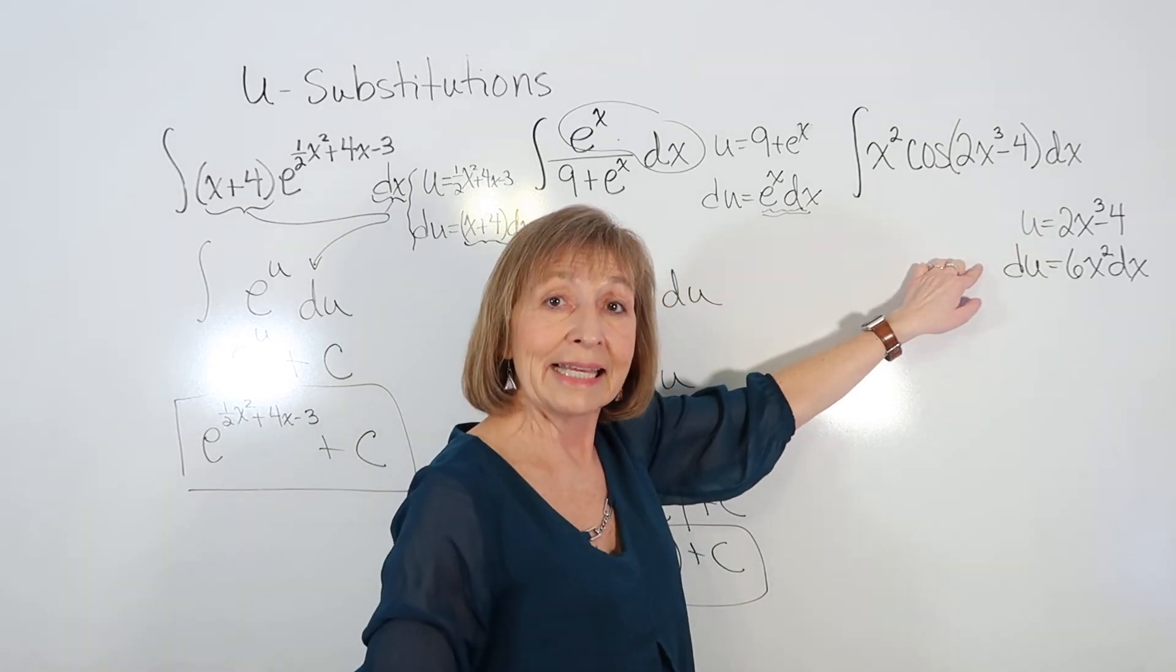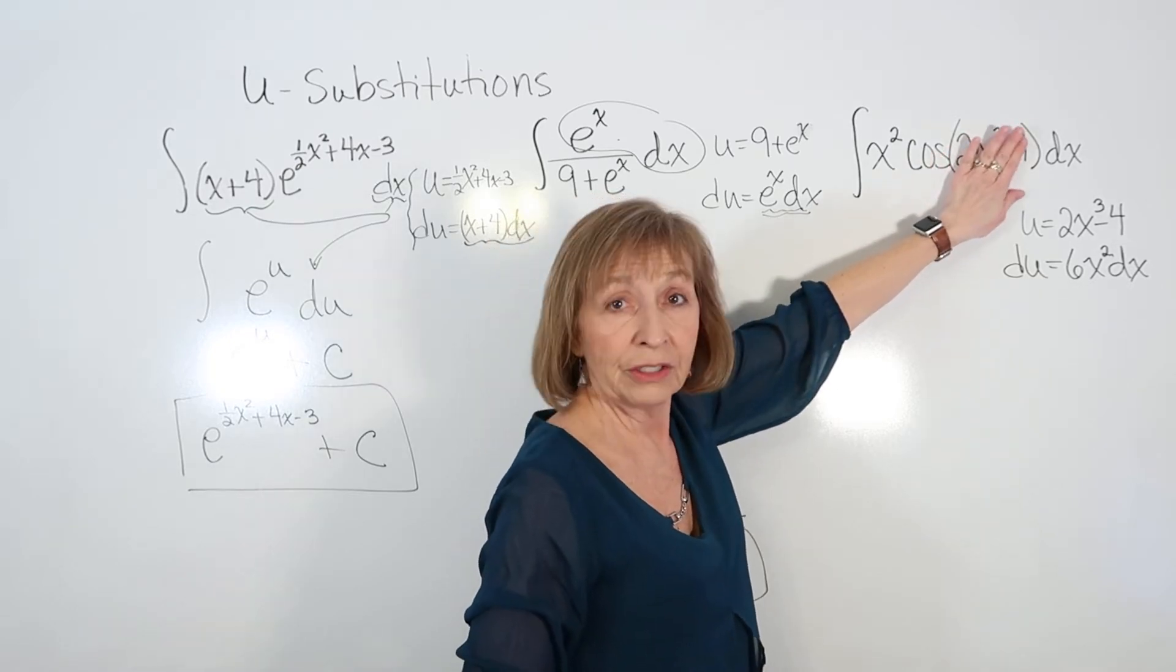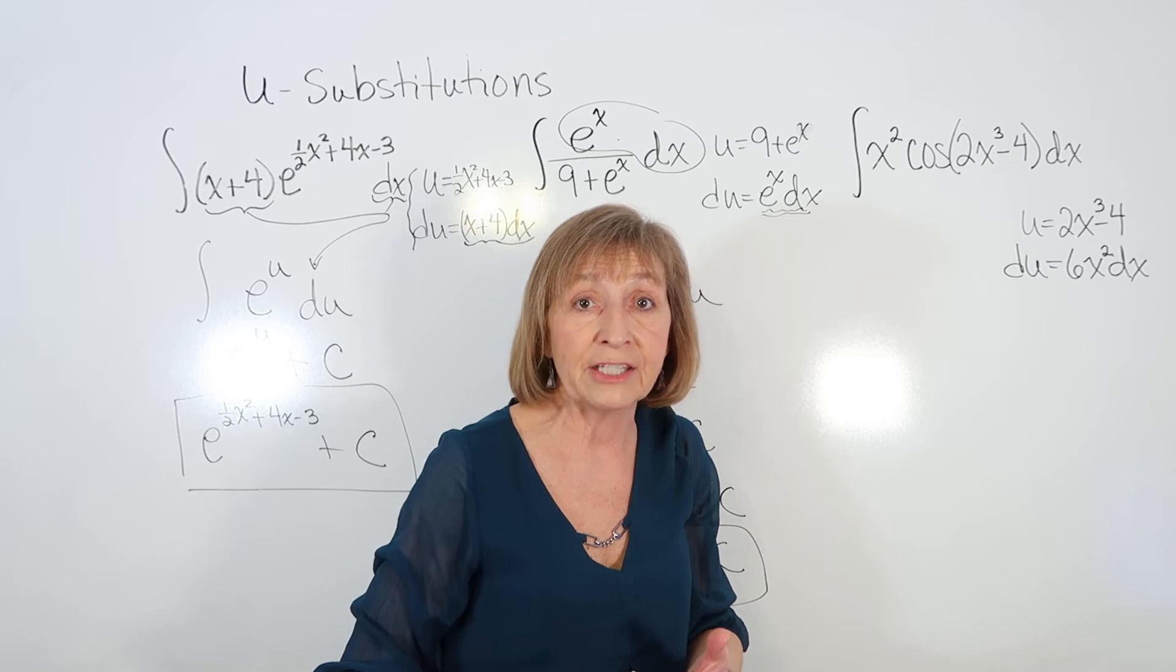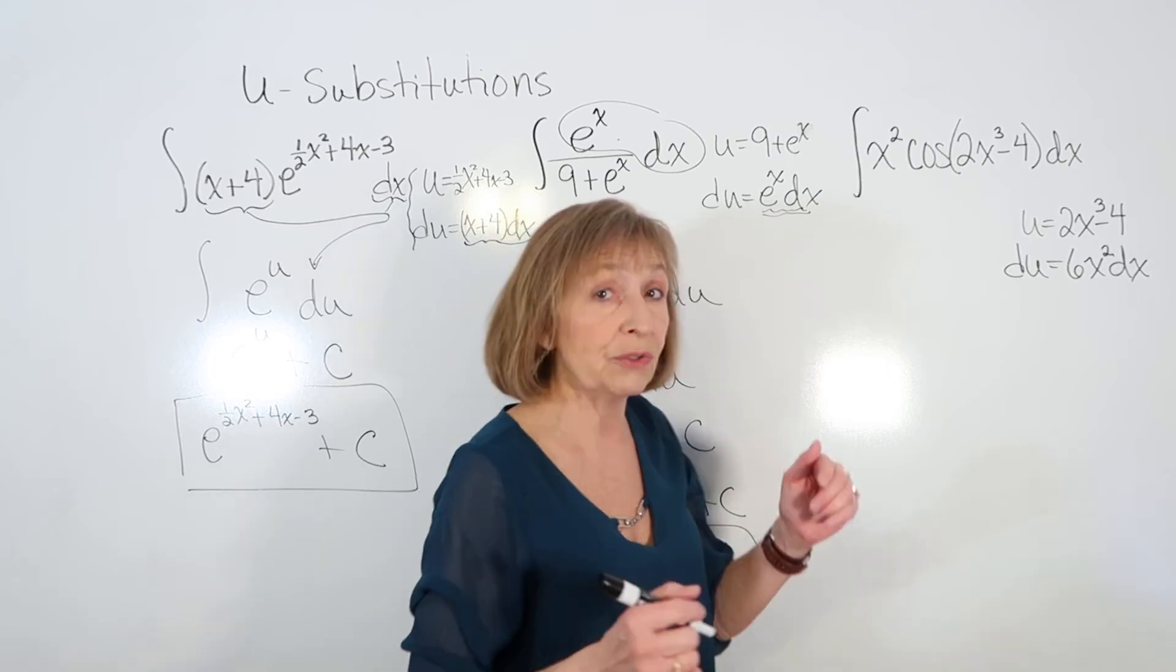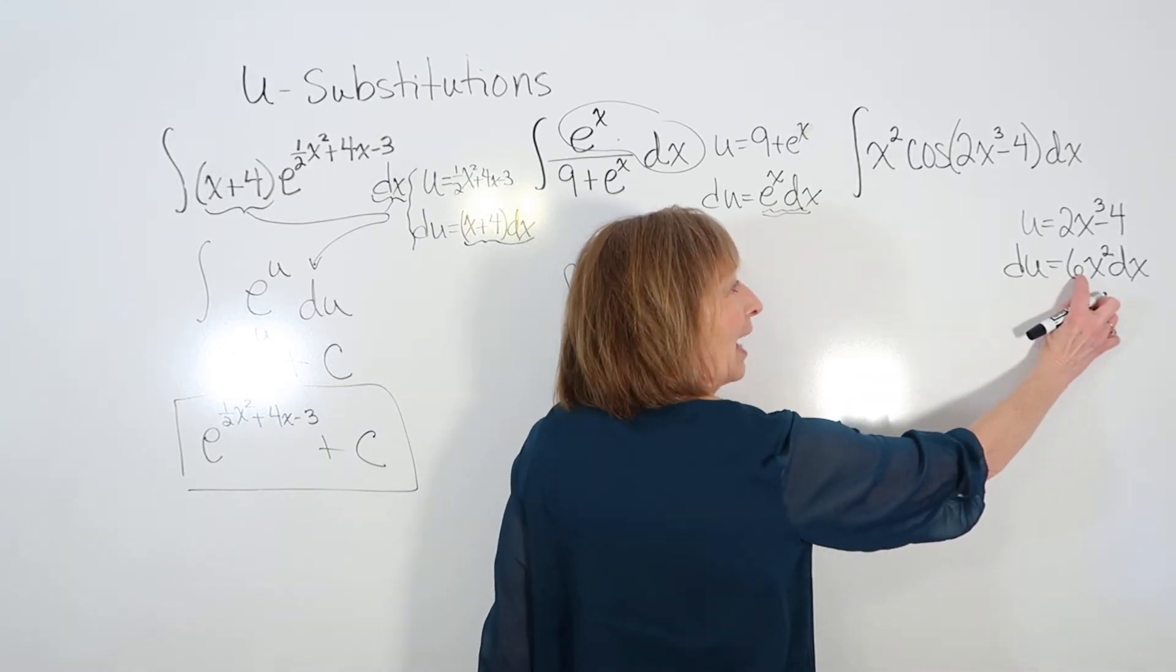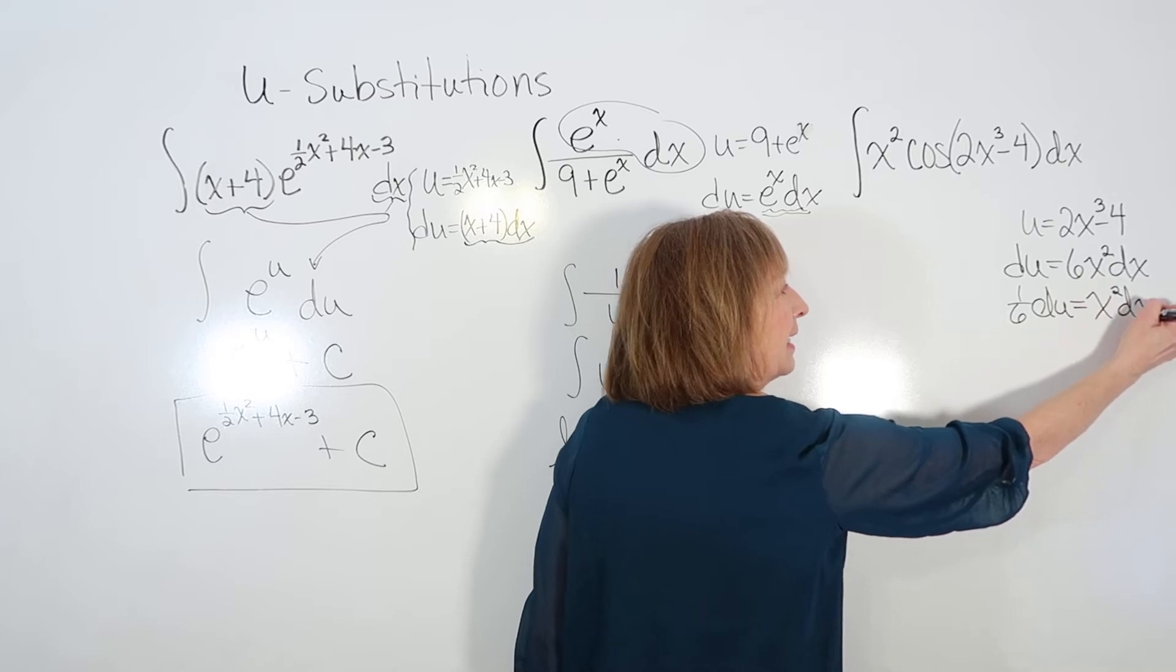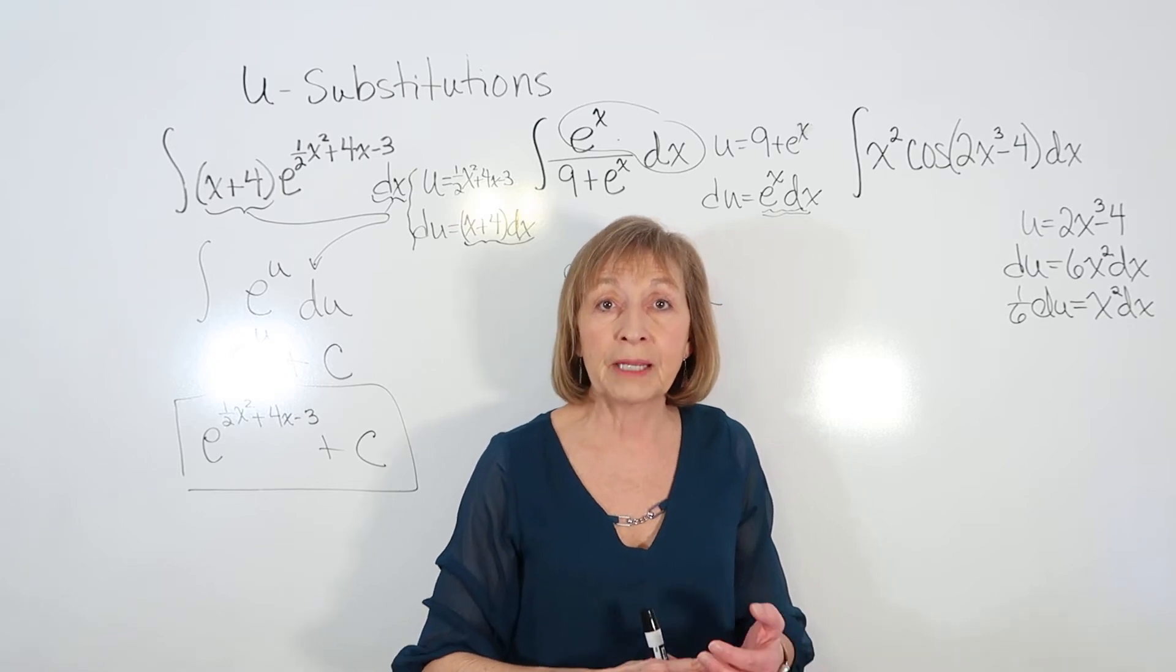So now when we're looking at this, we now look back and see what we have. I've got cosine of the u, and I have x²dx, but I don't have this factor of 6. But 6 is a number. It's a multiplication of a number. So I can fix that, or I can manipulate that, and I can do it in one of two places. I'm going to work with it down in our differential. So I can divide both sides of this by 6 to say 1/6 du is the replacement for x²dx. And again, it has to be only a numerical factor that we're off by in order to be able to do this.